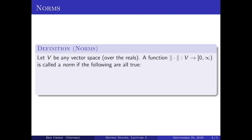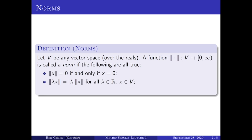Suppose you have a vector space V — it doesn't have to be a finite dimensional vector space. Then a norm function from V to the positive real line is called a norm if the following are all true. First, the norm of X is zero if and only if X is zero. The norm respects scalar multiplication: the norm of lambda times X is the absolute value of lambda times the norm of X, for all scalars lambda in the reals and X in V. And the norm of X plus Y is bounded above by the norm of X plus the norm of Y whenever X and Y lie in V.